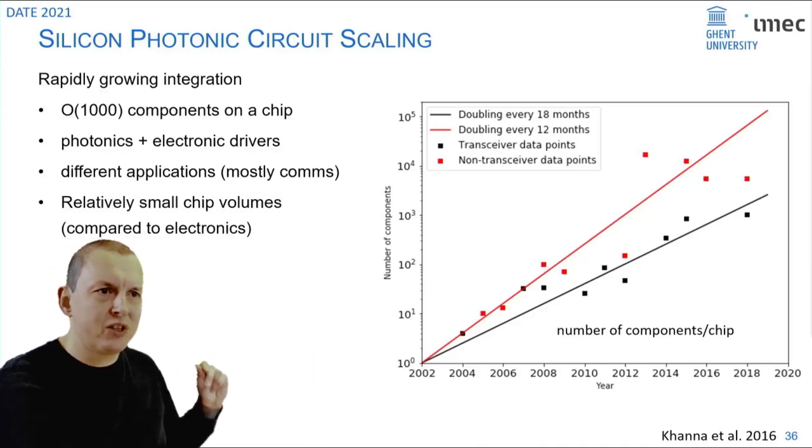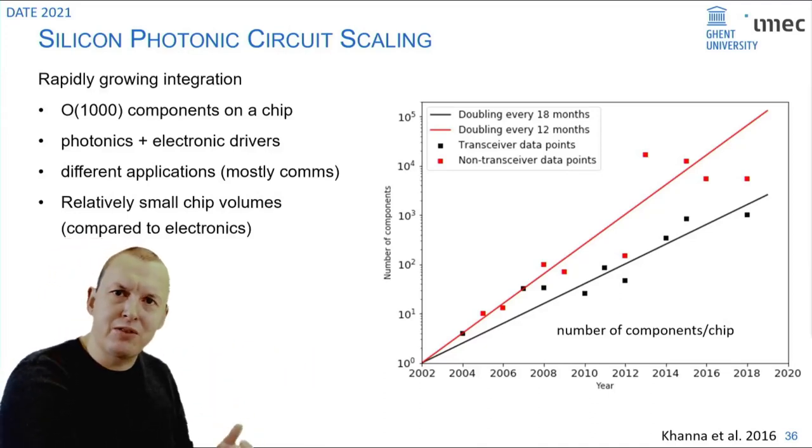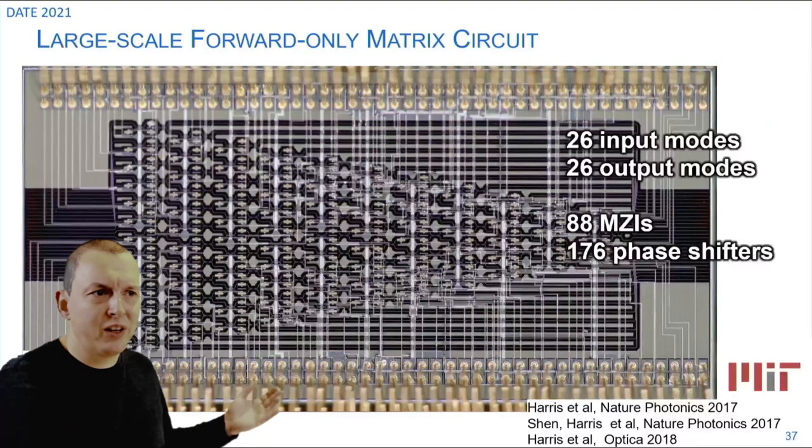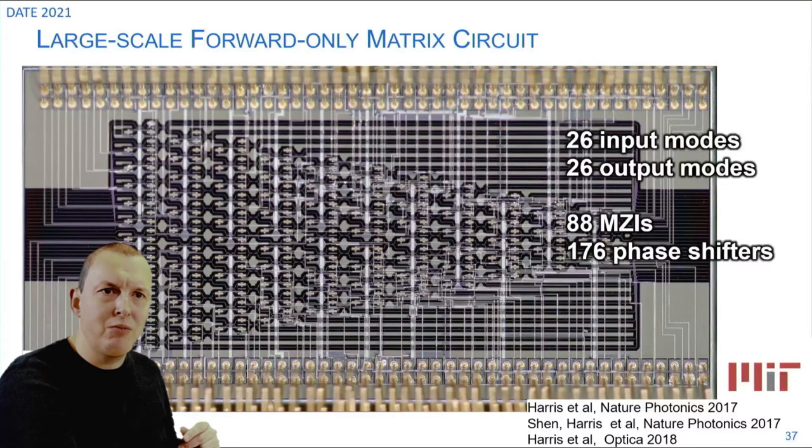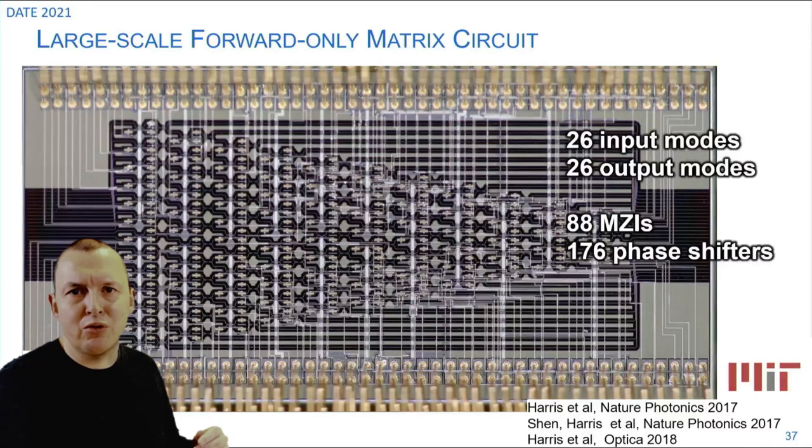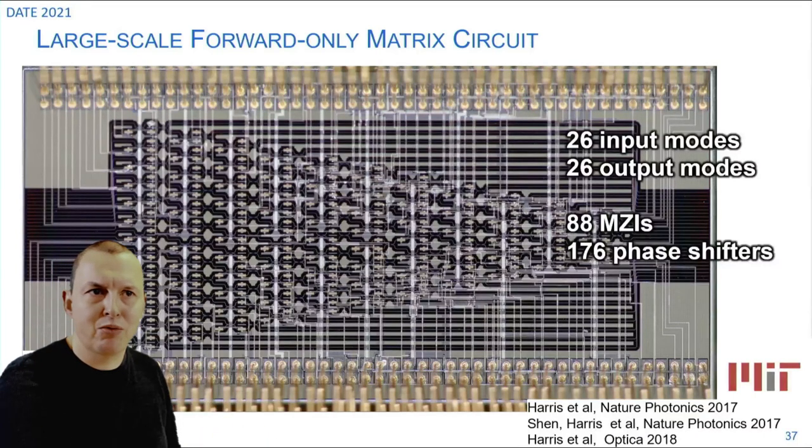Silicon photonics gives you a scaling that you cannot do with other technologies. You see this graph which shows the complexity of silicon photonics circuits over the past couple of years and there is a steady increase which you can almost identify as Moore's law. As a result it was no surprise that already in 2017 we saw this circuit coming out of MIT with 26 input and output modes and almost 200 phase shifters to control the relations between the inputs and the outputs.